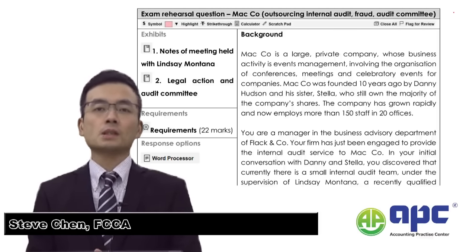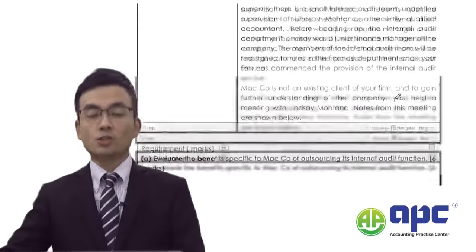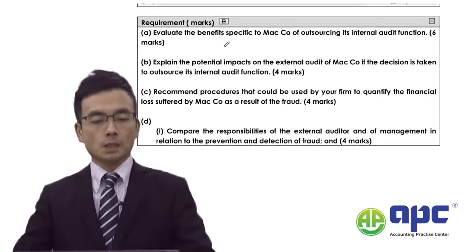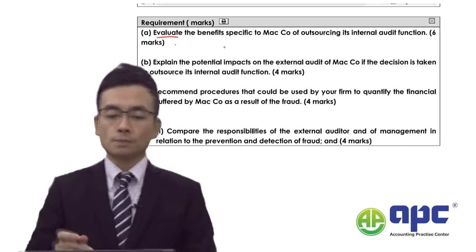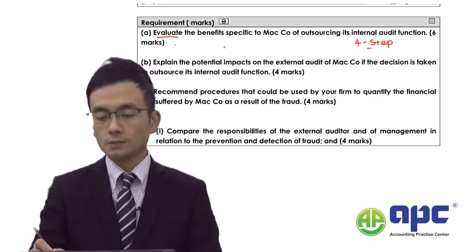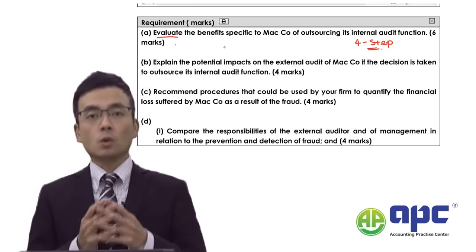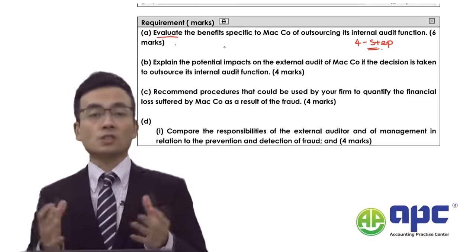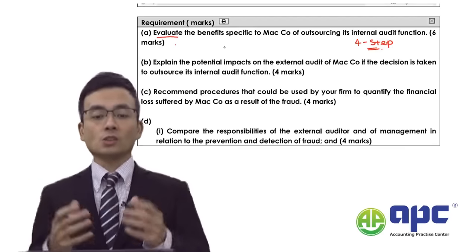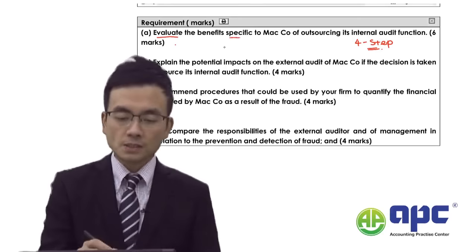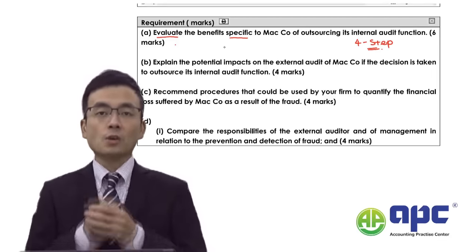Welcome to our case study section. In this past exam question called MACL, there are several requirements. Part A requires us to evaluate the benefit - notice the verb 'evaluate', so I'm going to apply the four-step approach from our course. I would say to a student that it's not all about knowledge to pass the AAA exam, but also about exam technique. We need to evaluate the benefit specific to MACL, bringing the case information to the client's company.